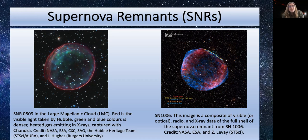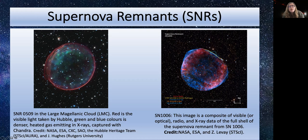This supernova remnant is SN 1006, again a composite. We have optical observations, radio observations in red, and X-ray observations in blue. We can see the full shell of the supernova remnant using these three different wavelengths. The radio data and X-ray data are more or less in the same place, but the visible light only comes from a smaller region observed with Hubble. The entire object has a radius of about 20 parsecs, which we can determine only based on its distance.